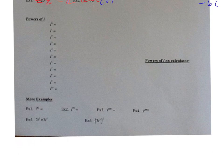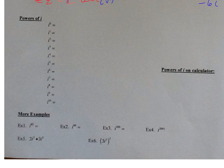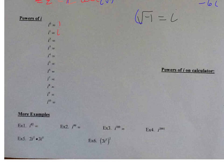Now let's talk about the powers of i. We have i to the 0 — anything to the 0 power, from our laws of exponents, is equal to 1. We have i to the first power — anything to the first power is itself, which is i. Now i squared: remember, the square root of negative 1 is i. We can get rid of the square root by squaring both sides — they cancel each other out — so negative 1 equals i squared. Therefore, i squared equals negative 1.